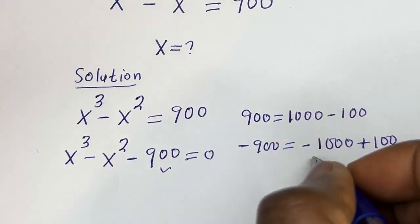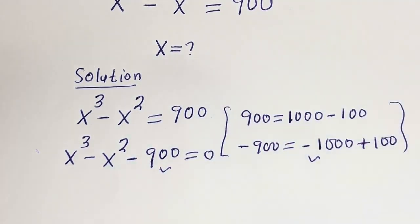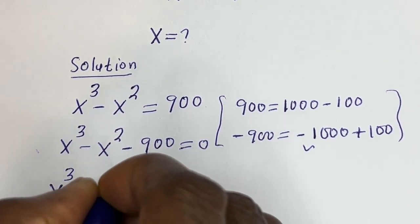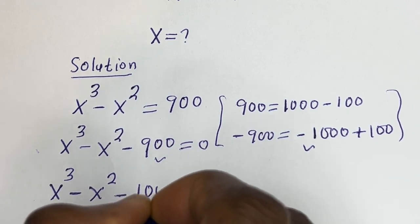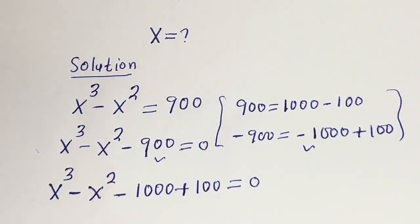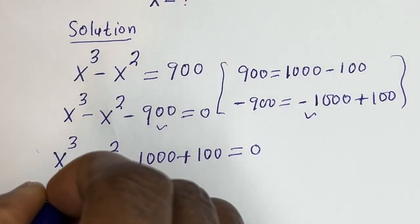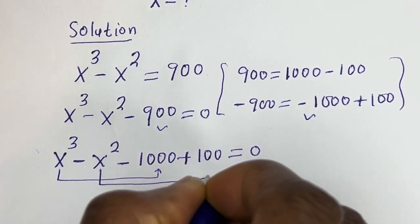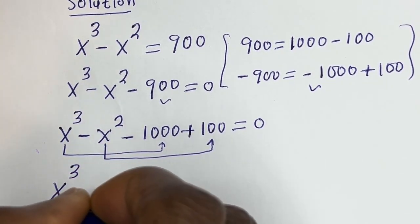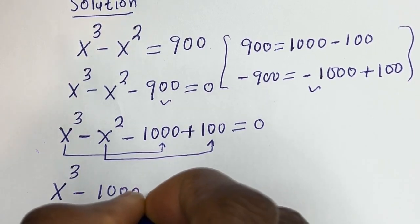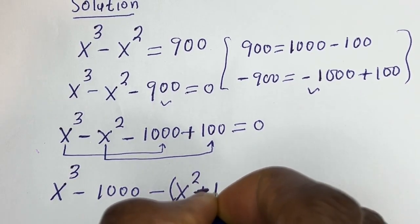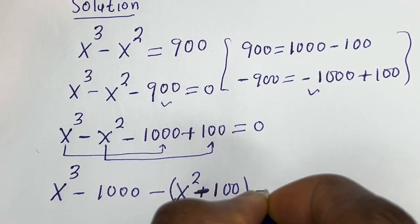Now let's replace this. This can be written as s to the power of 3 minus s squared minus 1000 plus 100 is equal to 0. Then from here, let's pair the first with the third and the second with the fourth. We have s to the power of 3 minus 1000, then minus s squared minus 100, is equal to 0.